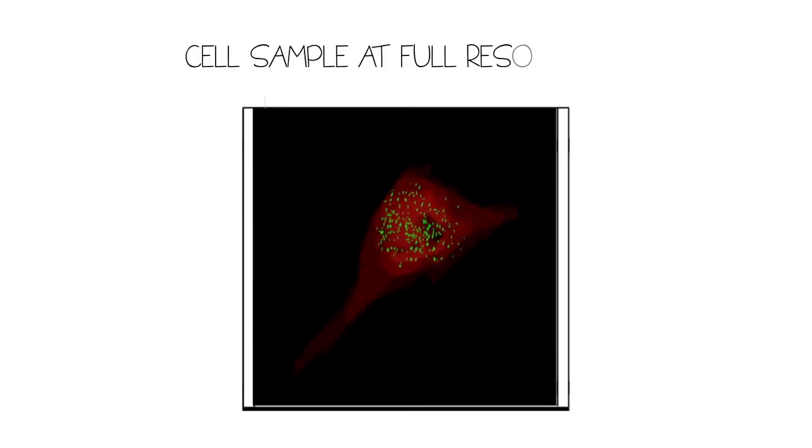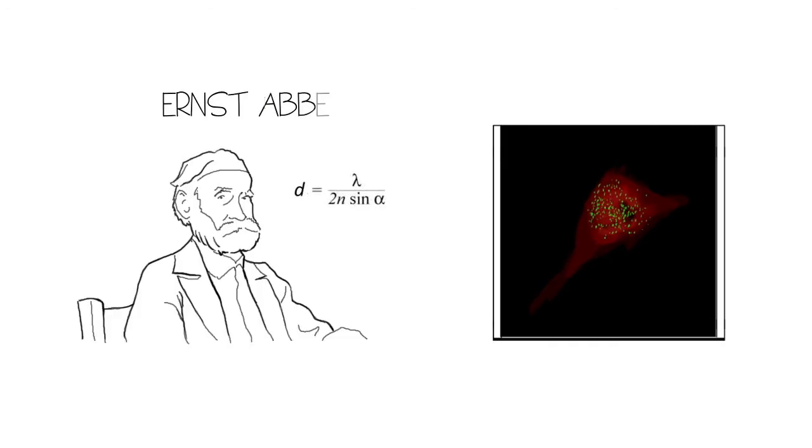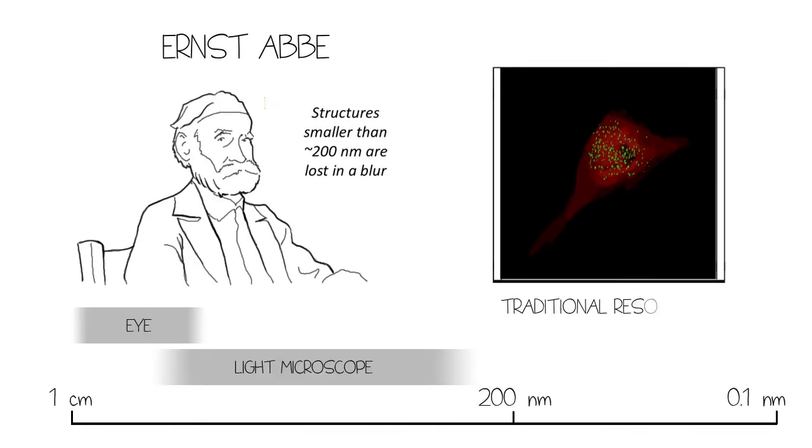The resolution needed to image subcellular architecture and dynamics in light microscopy is hindered by the diffraction limits as described by Ernst Abbe. Simply stated, structures smaller than 200 nanometers are lost in a blur.